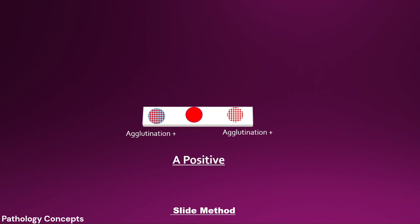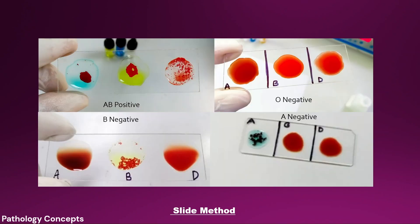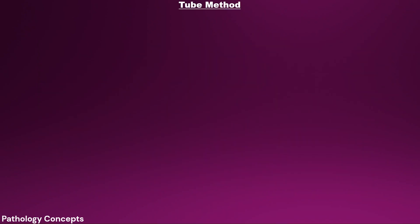Agglutination seen in anti-A serum and anti-D serum indicates blood group A positive. The actual pictures show: AB positive — agglutination in all three antisera; O negative — no agglutination in any antiserum; B negative — agglutination with anti-B serum only; and A negative — agglutination with anti-A serum only.